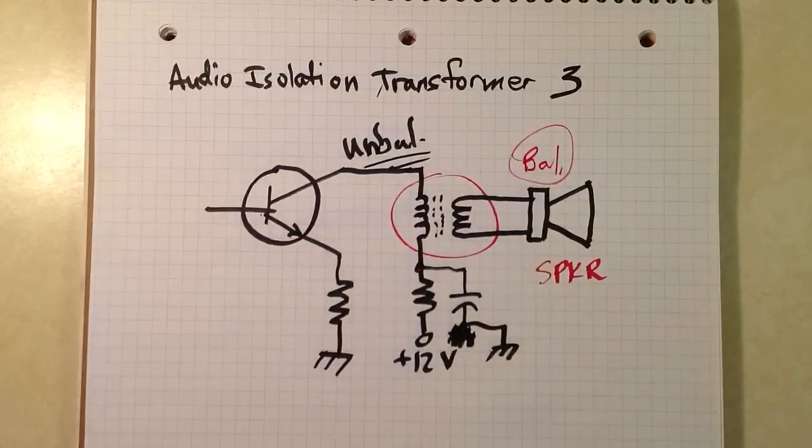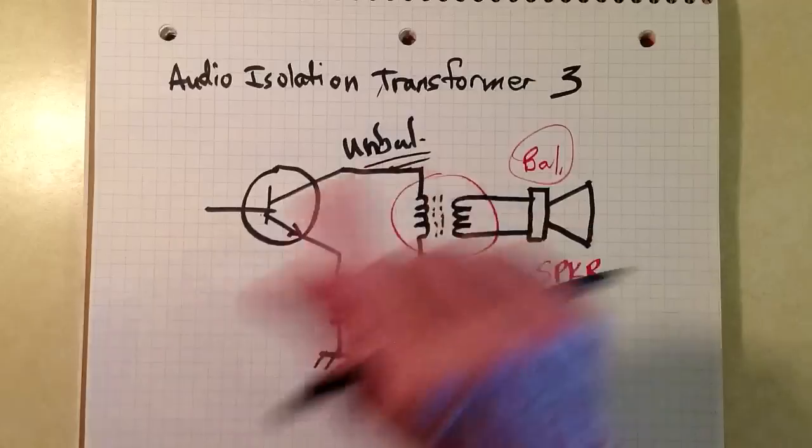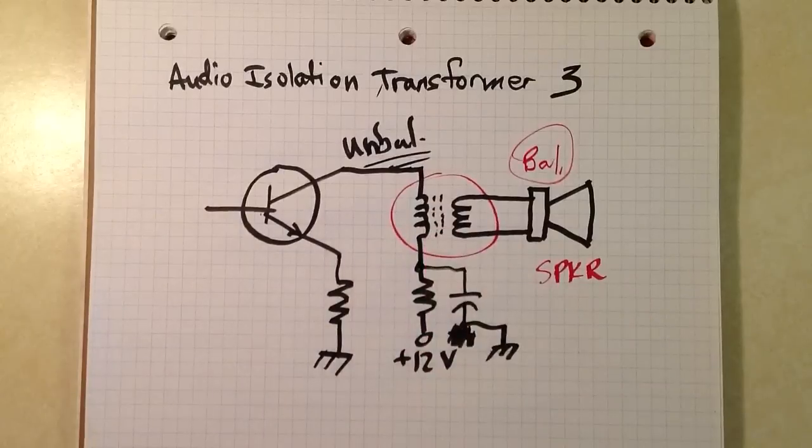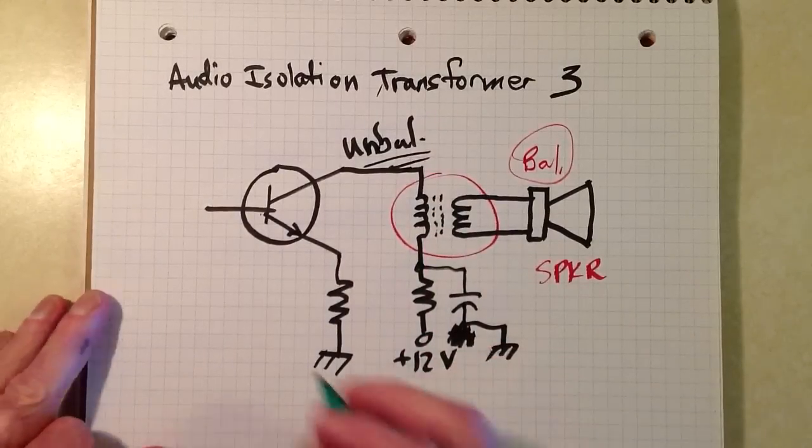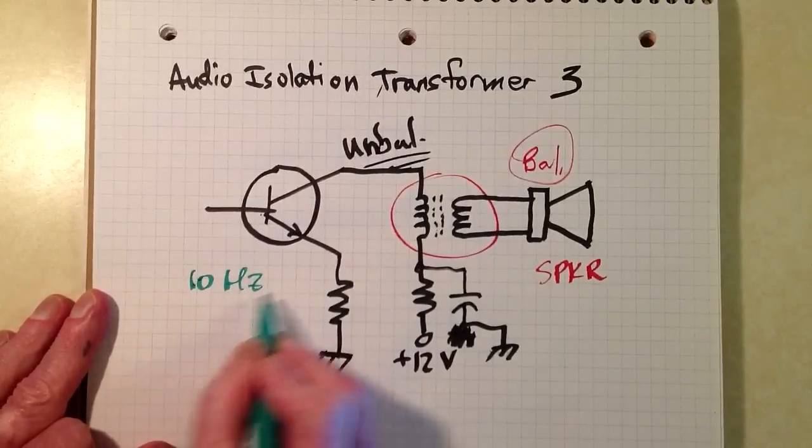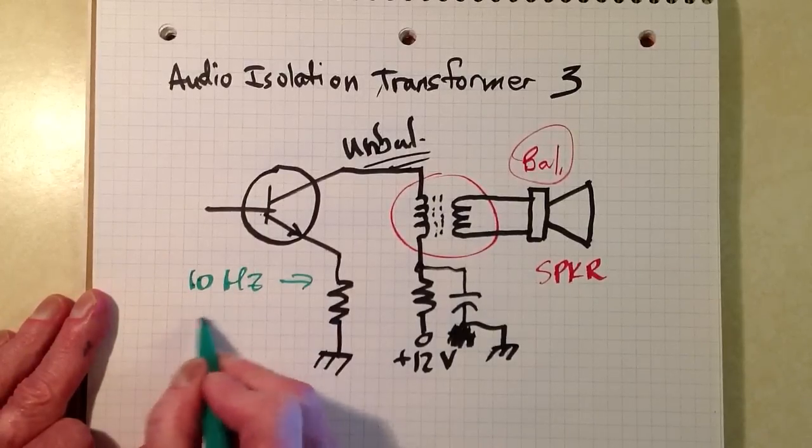There's another advantage though, and that is that you can make an isolation transformer have a broad banded response, say from all the way from 10 hertz up to, let's just say, 50 kilohertz, well beyond the audio range on either side.